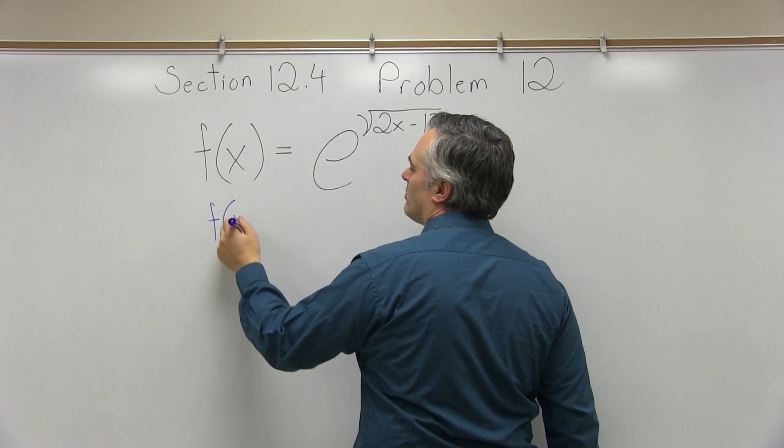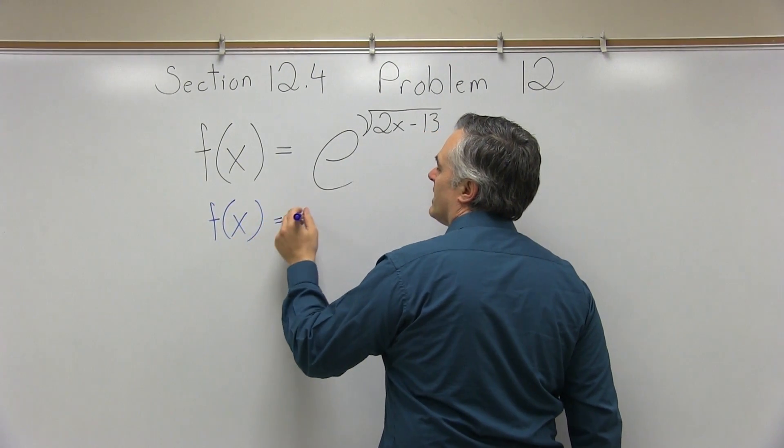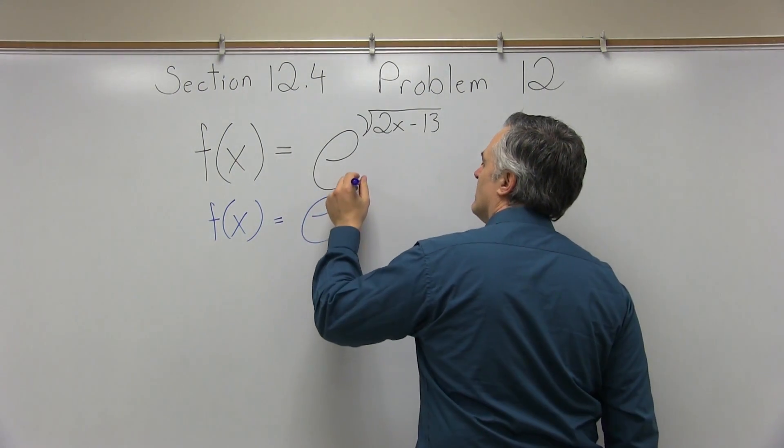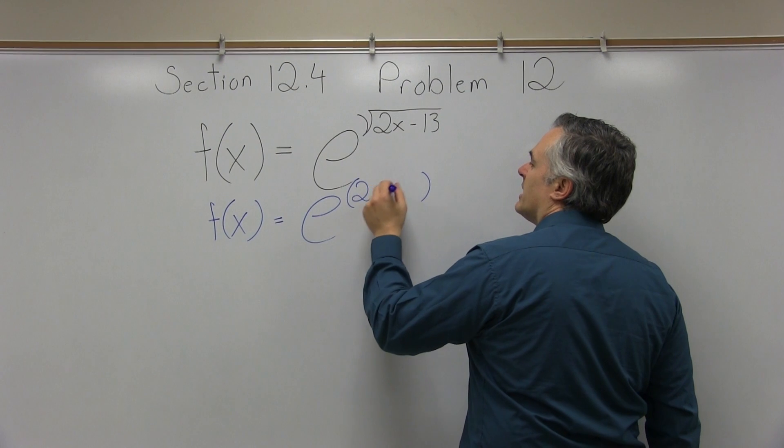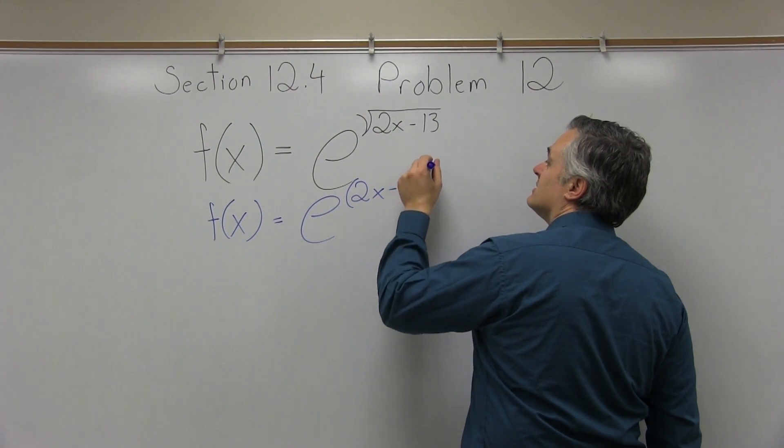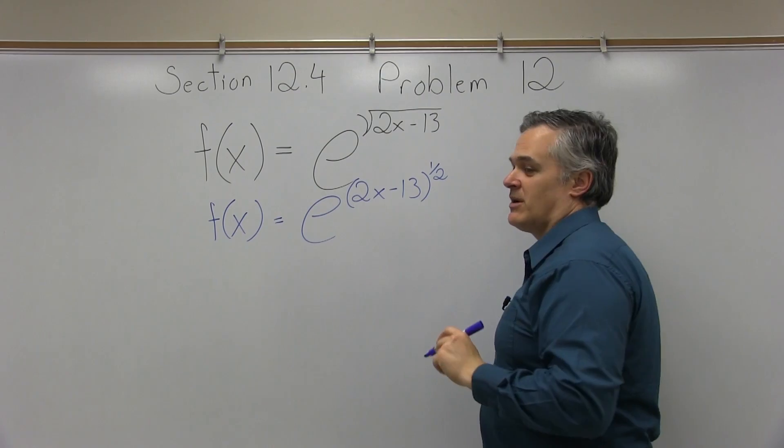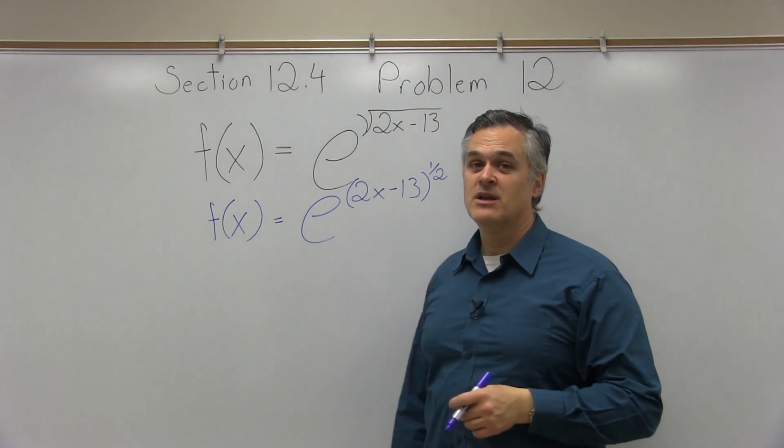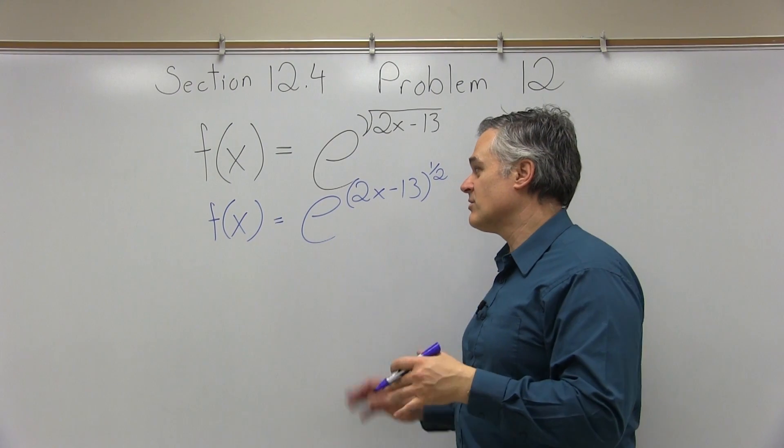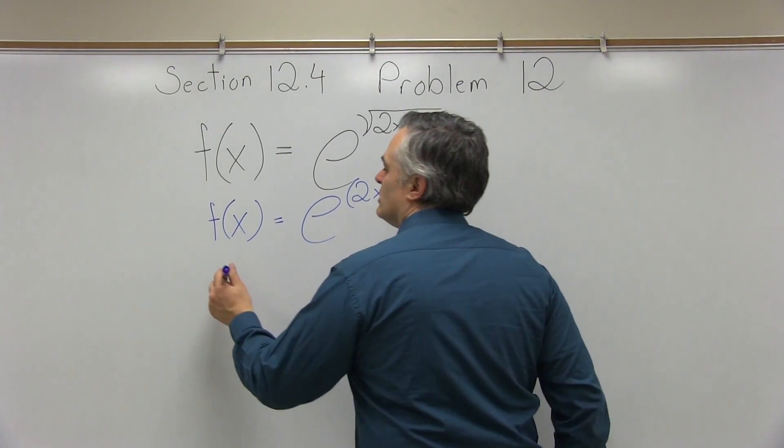So I'm going to start with f. Note, no prime yet. f of x equals e to the, and I'm going to write the exponent a little differently, 2x minus 13 in parentheses to the 1 half power. So that's still square root of 2x minus 13, but it's in a format now that I can deal with with my calculus rules.